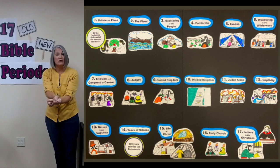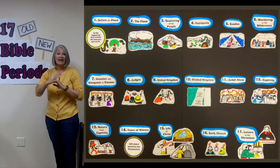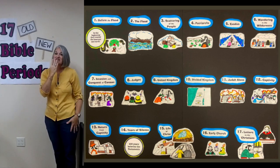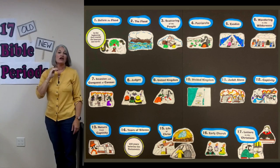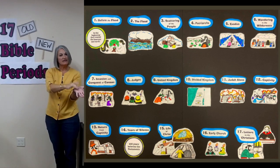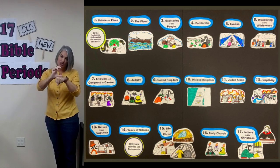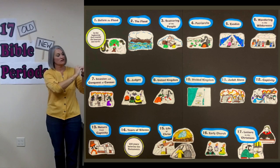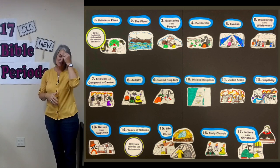Then we return from captivity and when we return, we rebuild the wall of Jerusalem. Years of silence — we put up four fingers over our mouth because there were 400 years of silence between the Old and the New Testament. God did not speak either to the people himself or through men as he had done before. Life of Christ — we've got to put the nails in our hands because he died for our sins. Early church — you've got to have a rock and put your C on top because the church was built on the rock of truth. And then we have the letters to the Christians. So those are our signs and our actions. Now let's put it into practice with our song.